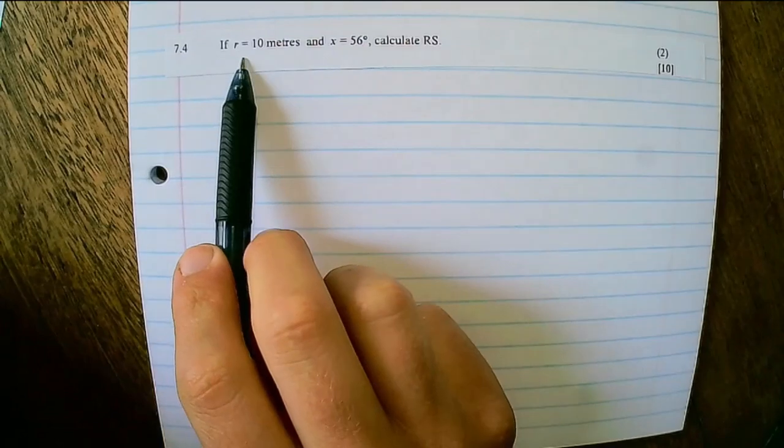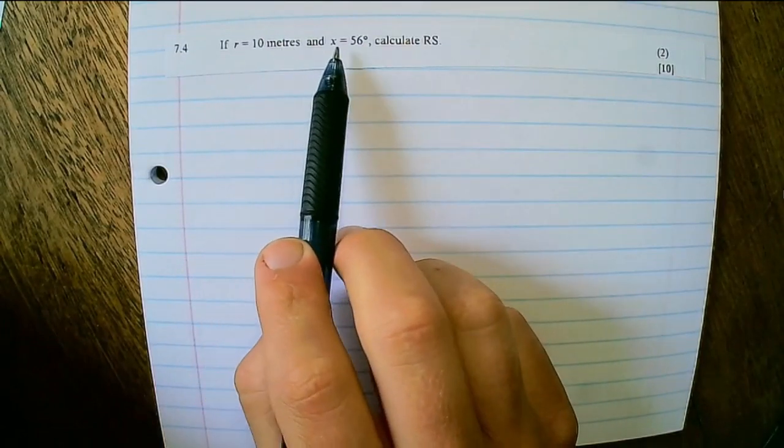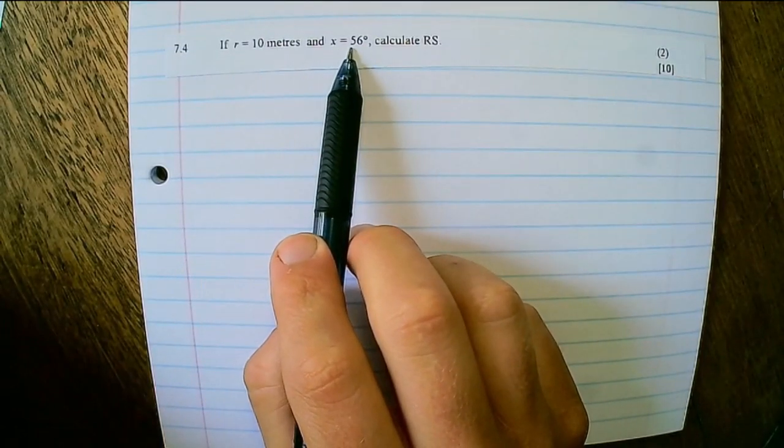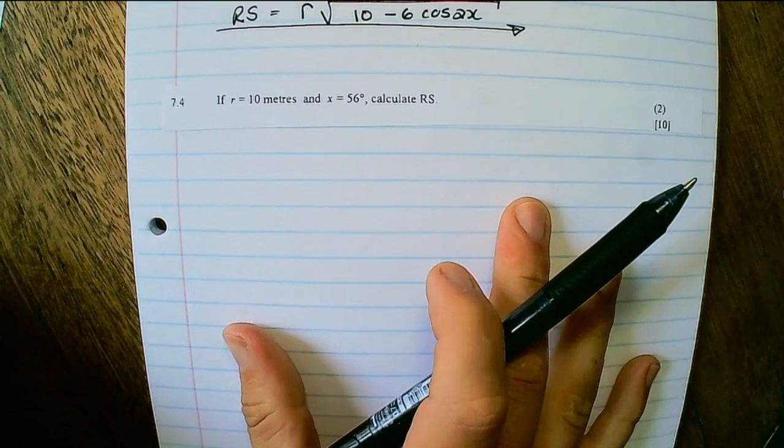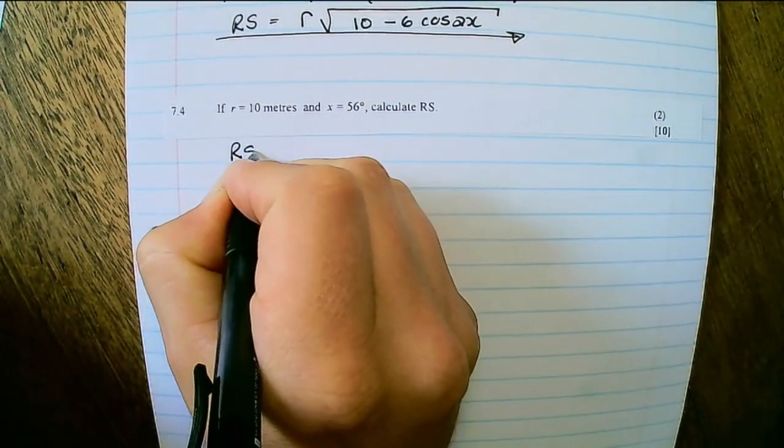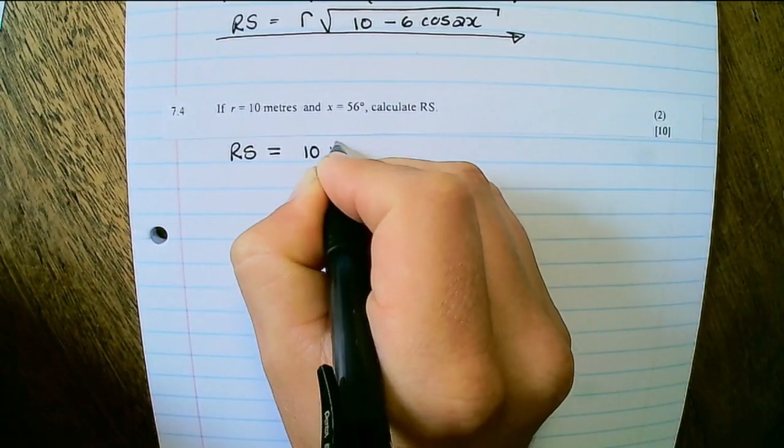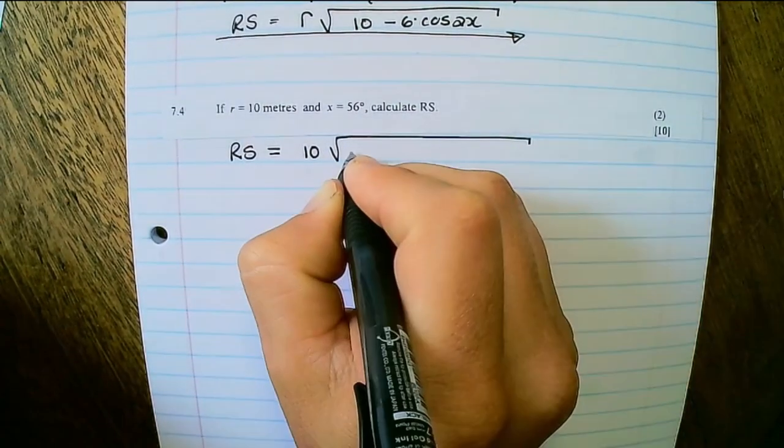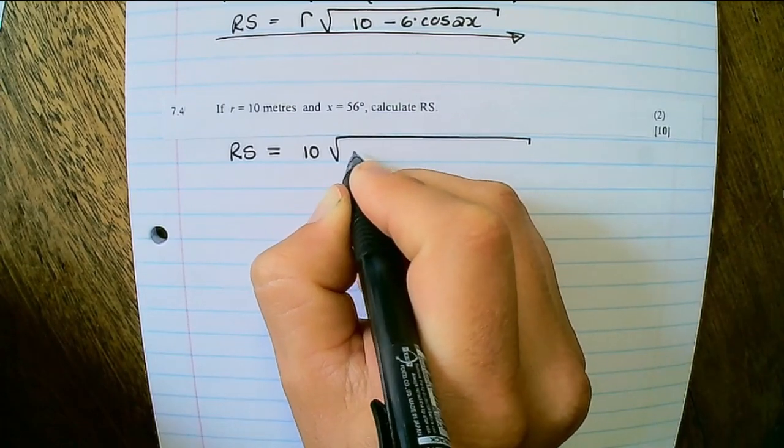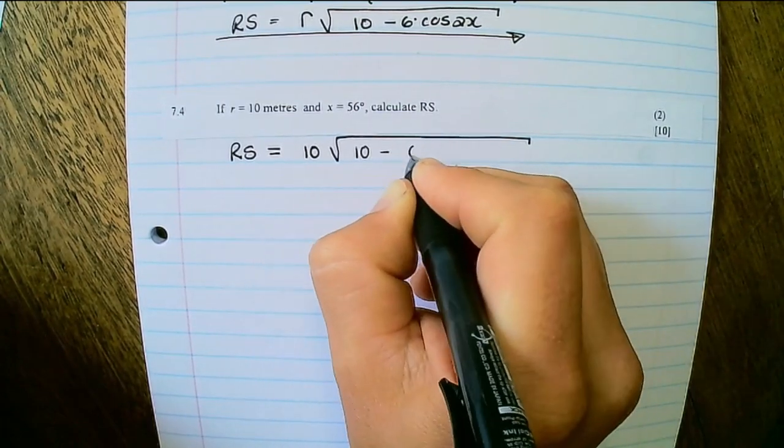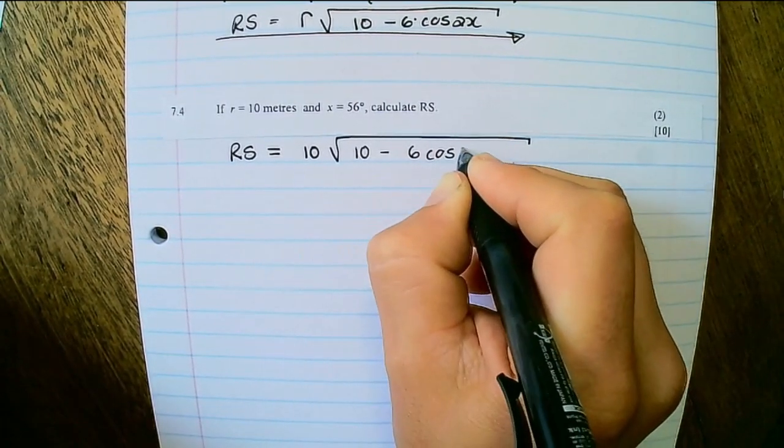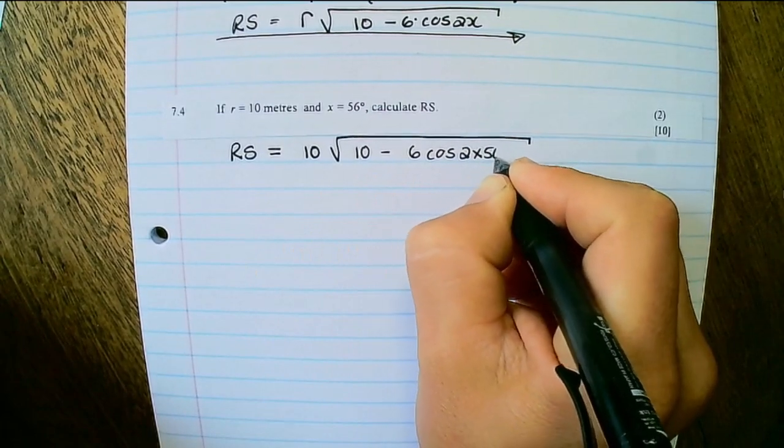7.4. So if R is 10 meters and X is 56 degrees, calculate RS. Now we have an equation for RS. So R is 10, then square root. Then I have on the inside of the square root, 10 minus 6 cos 2 times 56 degrees.